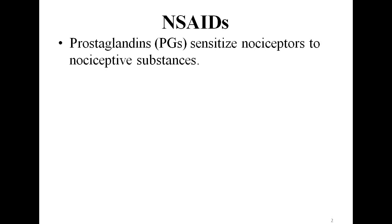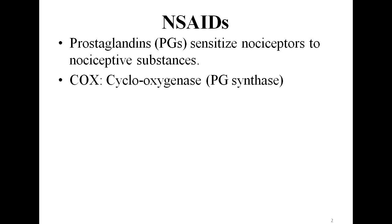Now coming to the basic mechanism of action: as we have read in physiology, prostaglandins are substances which sensitize pain receptors to pain-producing substances. That is, nociceptors are sensitized to nociceptive substances by prostaglandins. Prostaglandins are products of the enzyme cyclooxygenase, also called prostaglandin synthase, which produces prostaglandins.